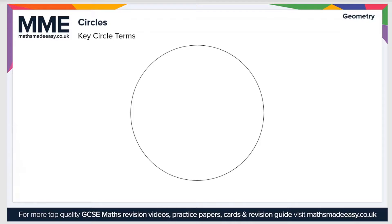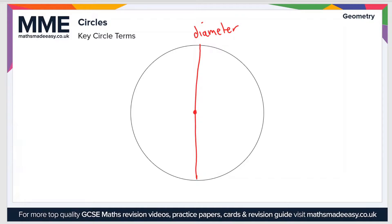Let's start with the most basic, which is a straight line from one side of the circle to the other joining the two edges — that is a diameter. The diameter splits the circle perfectly in half.